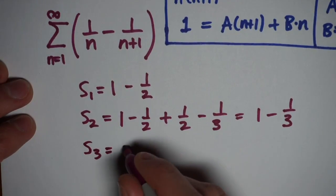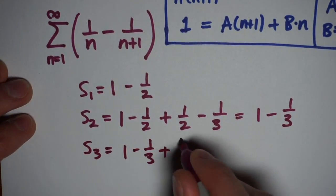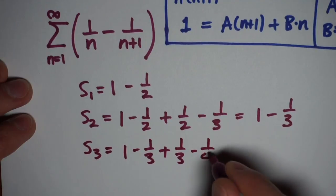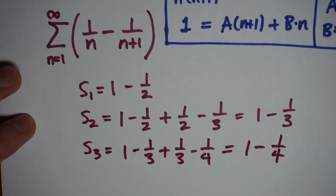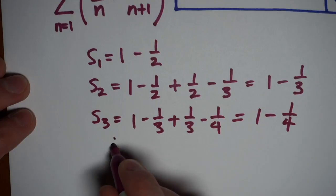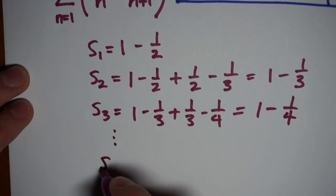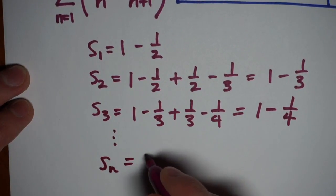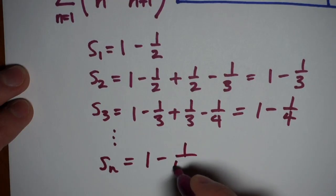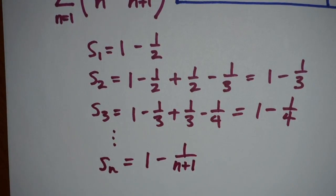s3 is going to be s2, one minus a third, plus the next term, which is a third minus a fourth. So my middle terms cancel again, and I'm ending up with one minus a quarter. And so when it's like this, we don't have to guess at a form for Sn. We can see that it's going to end up as one minus one over n plus one.